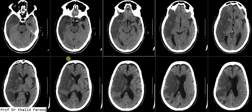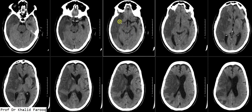Here we have multiple axial slices taken through the brain — this is a CT examination. We can see there is a large low density area in the right temporal lobe, favoring an acute ischemic insult in the distribution of the right MCA. We can also see a hyperdense right MCA sign in this region.